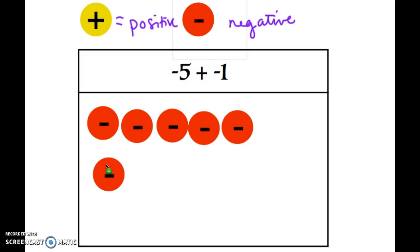For this, adding means combining, so I'm putting all these things together. All you have to do is simply look and count and see how many there are, and you can see that we have 6 red chips. Since red represents negative, that means that negative 5 plus negative 1 equals negative 6.